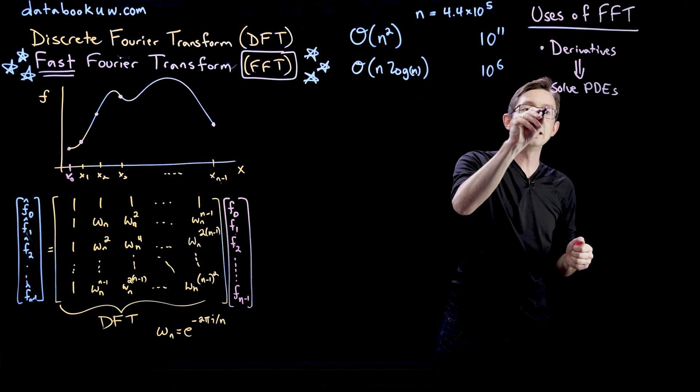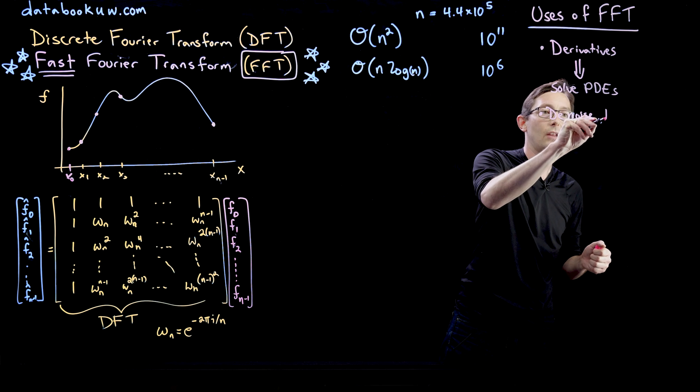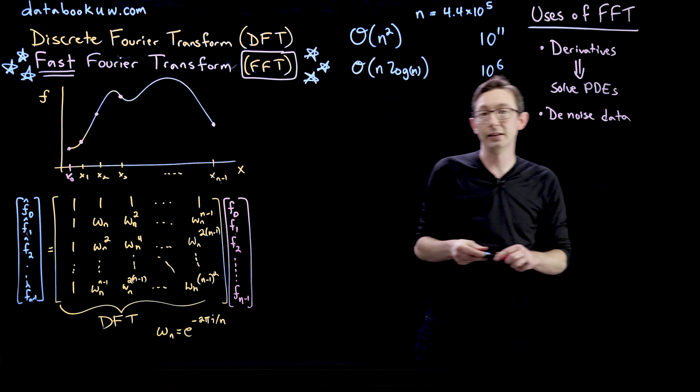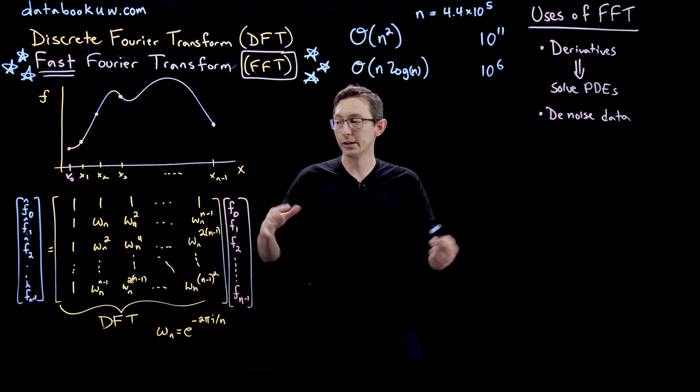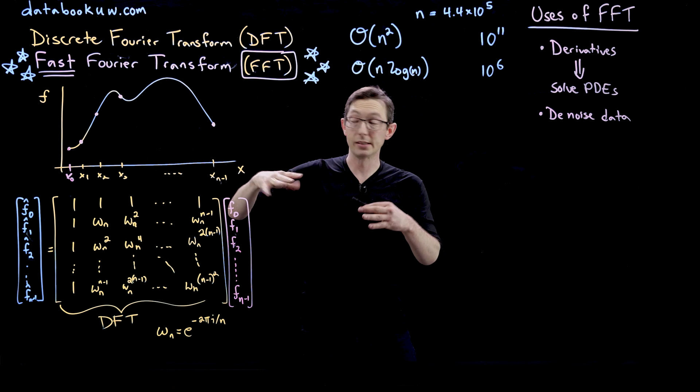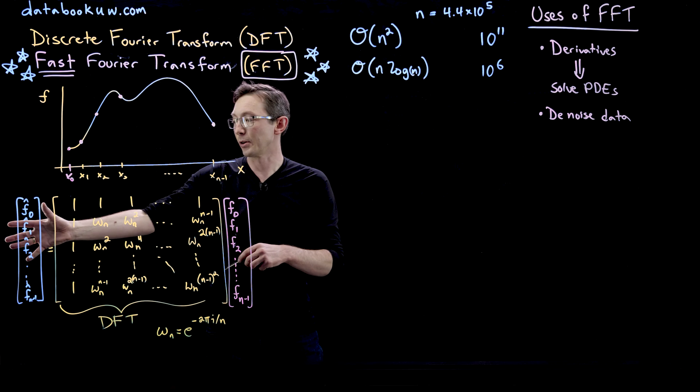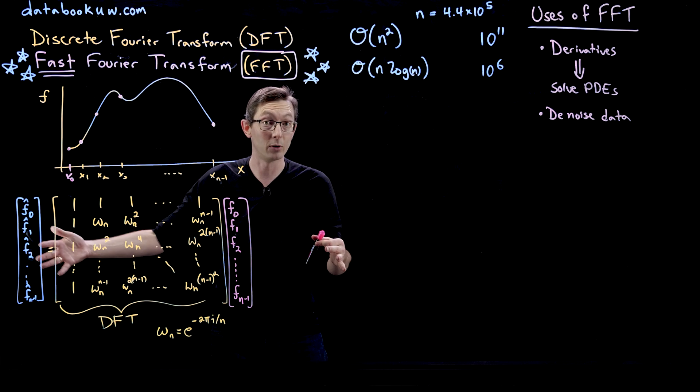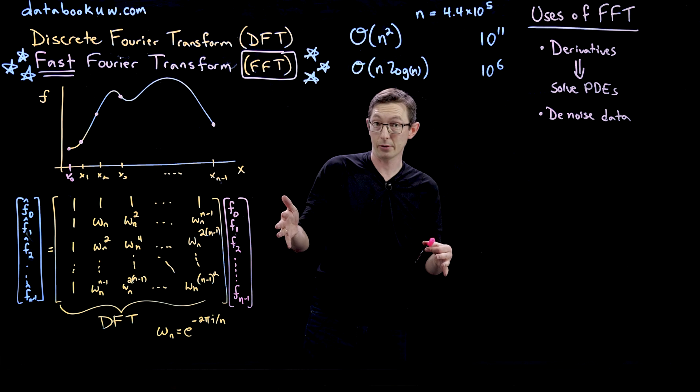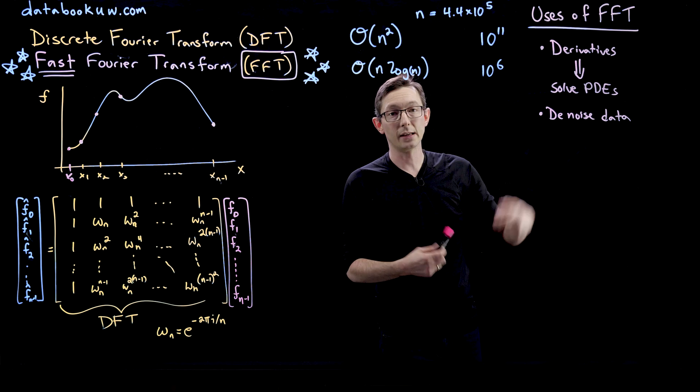Another is to denoise data. If you have noisy data, you might be able to filter some of that noise out if it's at certain frequencies using this fast Fourier transform. So we would take our data, Fourier transform, kill some of the maybe high frequency terms that have noise, and then inverse fast Fourier transform. So denoising data.